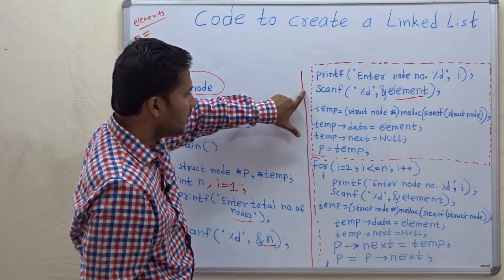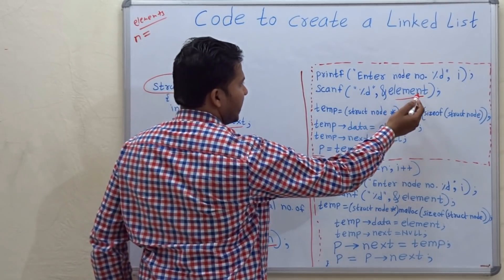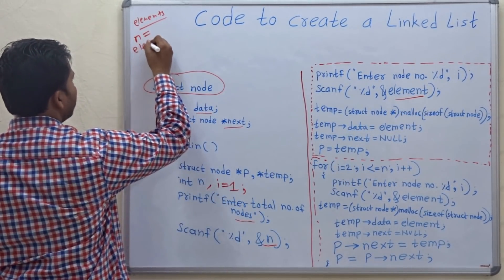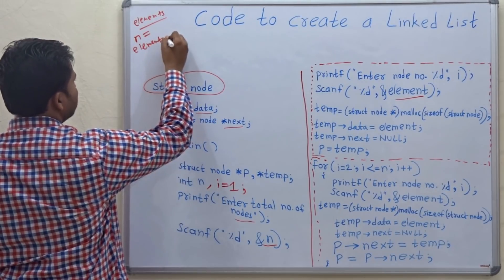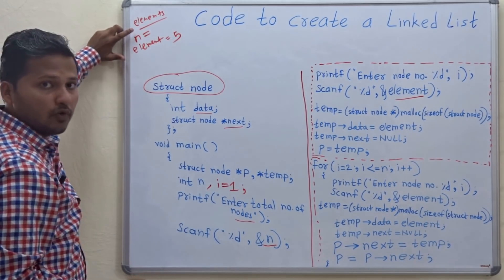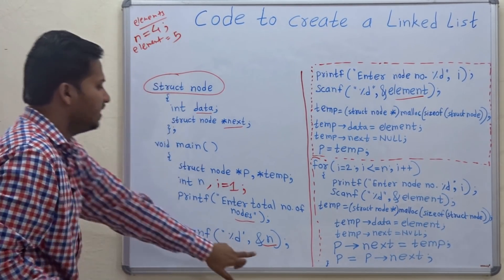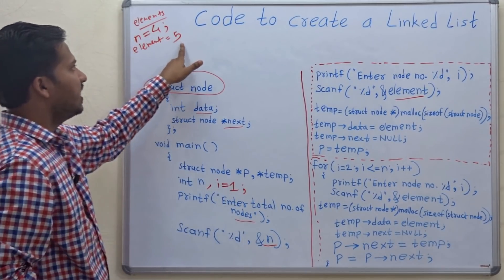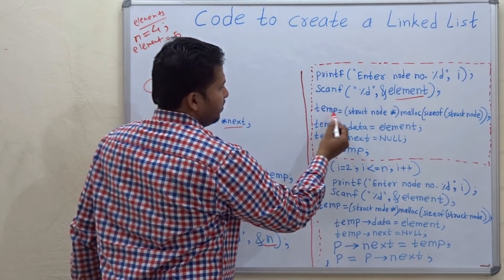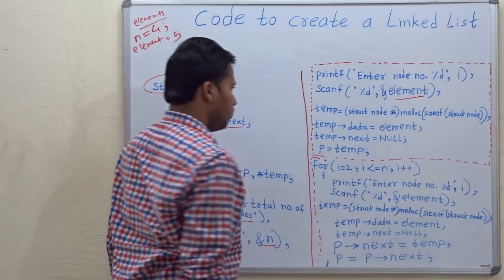This is my method: first take the initial node. Suppose the first element entered is 5, and the total number of elements is 4, so n is 4 and the first element entered is 5. Now: temp = (struct node*) malloc(sizeof(struct node)).